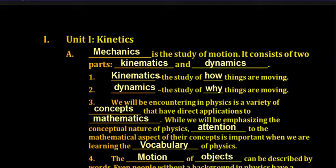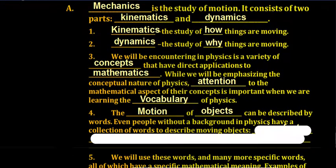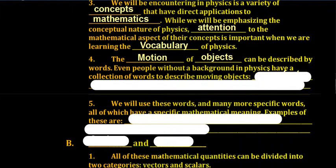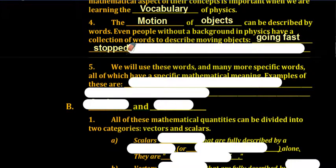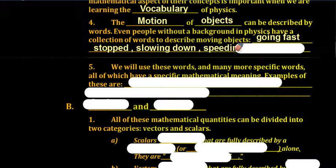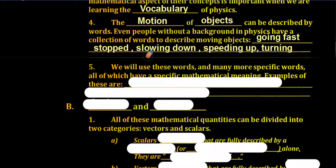The motion of objects can be described by words. Even people without a background in physics have a collection of words to describe moving objects — we say things like going fast, stopped, slowing down, speeding up, turning. All of these are descriptions of motion, but we have many others that are more specific and have specific mathematical meaning.